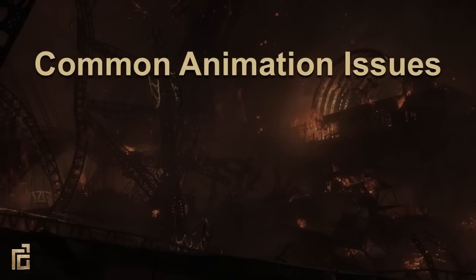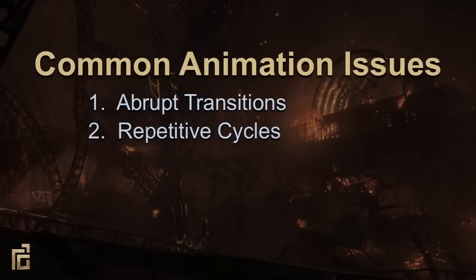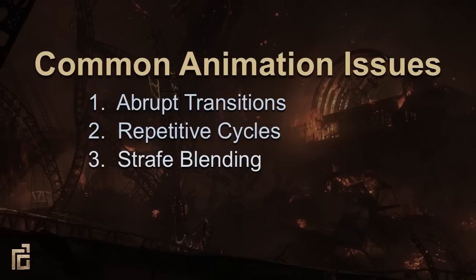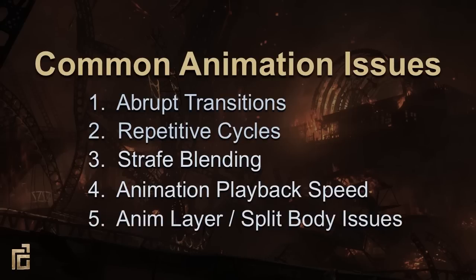Next, we identified some common characteristics of game animation that break immersion. First we have abrupt transitions — blending between two animations is often very noticeable and breaks the illusion of reality. And because of previous limitations, idle and move cycle animations can often be very repetitive. And since The Order: 1886 was based on strafing — which means you can face one direction while moving in any direction — we had to think about strafe blending. Games usually adjust animation playback speed to add more sensitivity to the control, but this can often lead to slow-mo or fast-forward looking animation. And last we have animation layer and split body, which are useful features but sometimes lead to the characters feeling like parts of their bodies are disconnected.